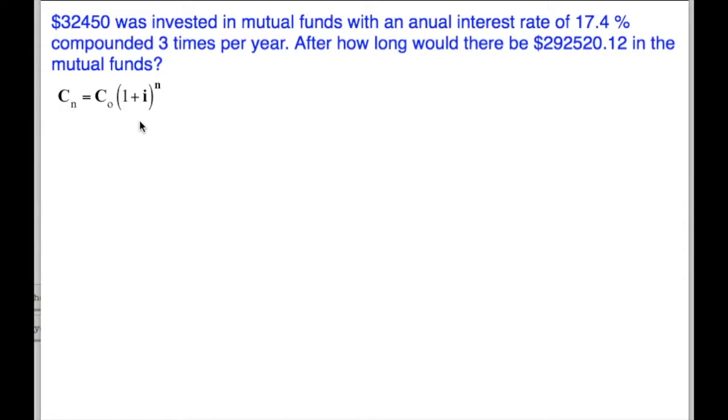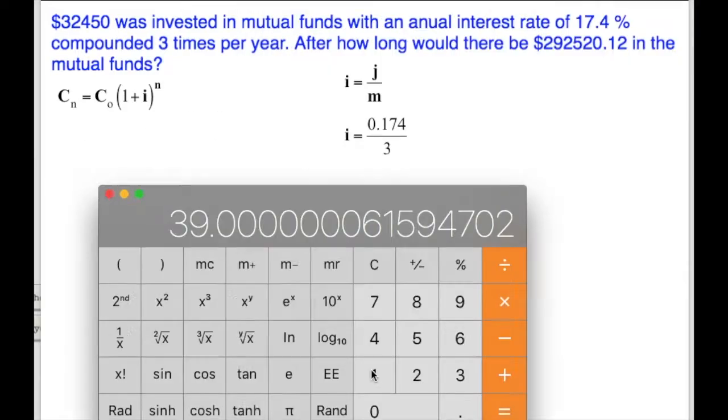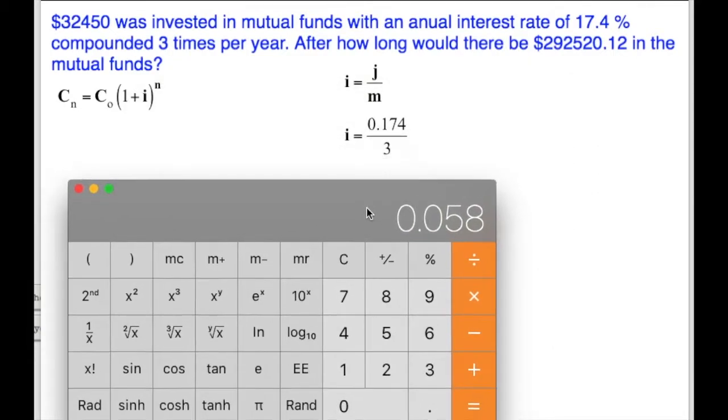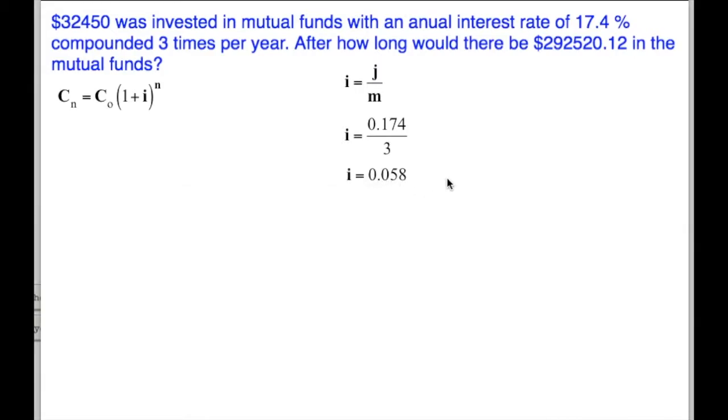First step is our exponential growth formula. C sub n equals C sub zero times one plus i to the power of n, where i is the annual interest rate divided by the number of compounds. 17.4% divided by three. 17.4% written as a decimal divided by 100 gives us 0.174. Divide that by three: 0.174 divided by three is 0.058.